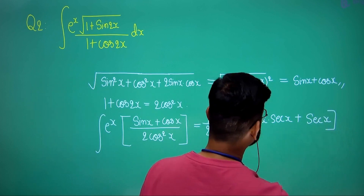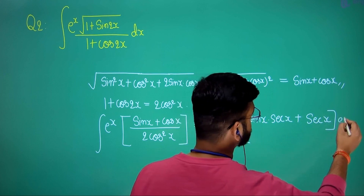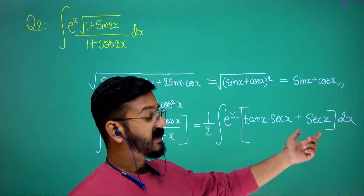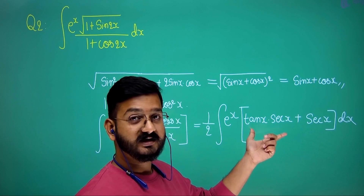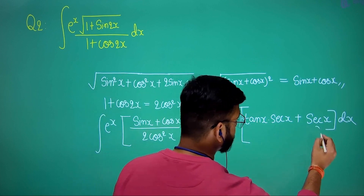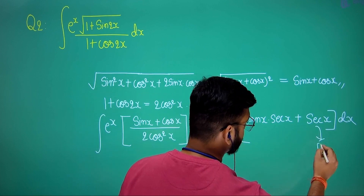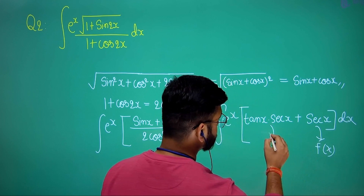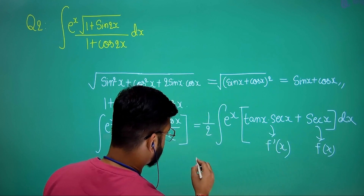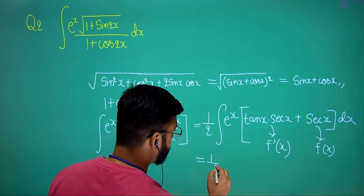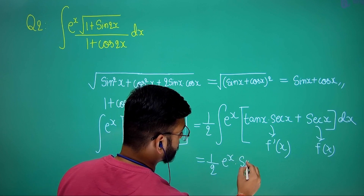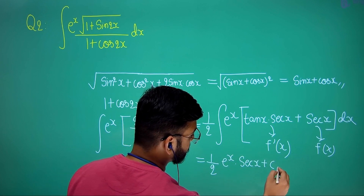The question is now almost solved. Taking sec x as f(x), its differentiation is sec x times tan x, which is f'(x). So applying the standard integral directly, the final answer is (1/2) times e to the power x times sec x plus C.